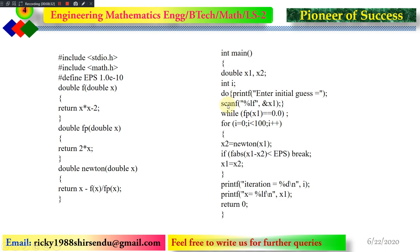The code prompts the user to enter the initial guess and reads it with scanf. This is a do-while loop: while fp(x₁) equals 0. If the value you enter makes the derivative 2x equal to zero, then we get a division-by-zero situation producing an infinite number, which would cause the code to stall. So the do-while loop checks for this condition and re-prompts if it occurs.